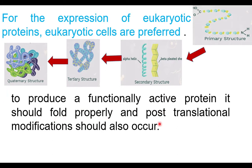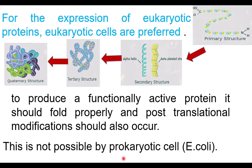To produce a functionally active protein, it should be folded properly and post-translational modification should occur. Translation is the process where protein is produced based on mRNA information. After translation, the primary structure changes to secondary and tertiary structures through folding — this is post-translational modification. Only after post-translational modification does the protein become functional, which is not possible in prokaryotic cells like E. coli.